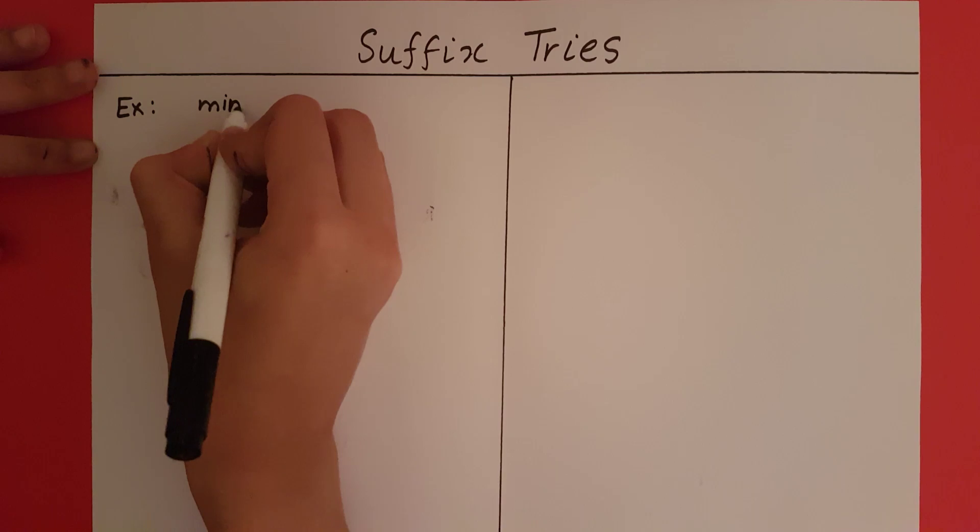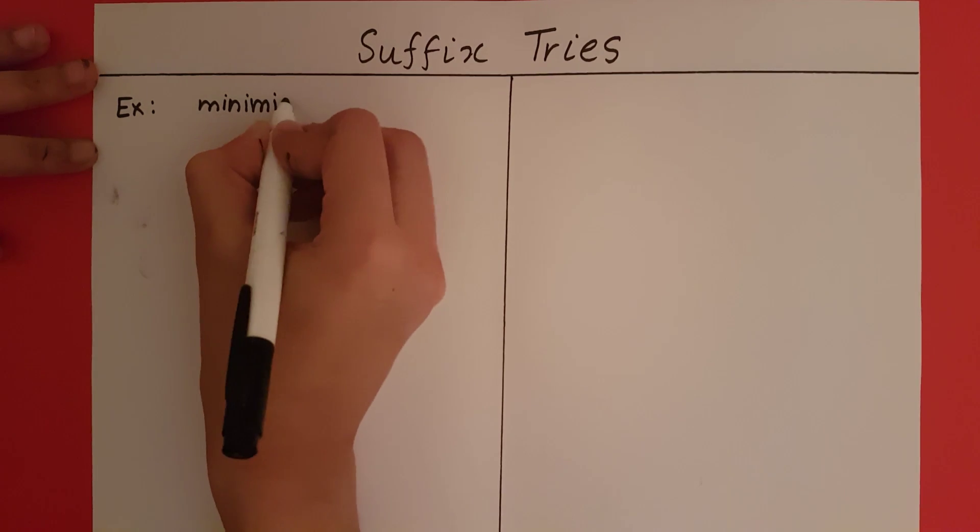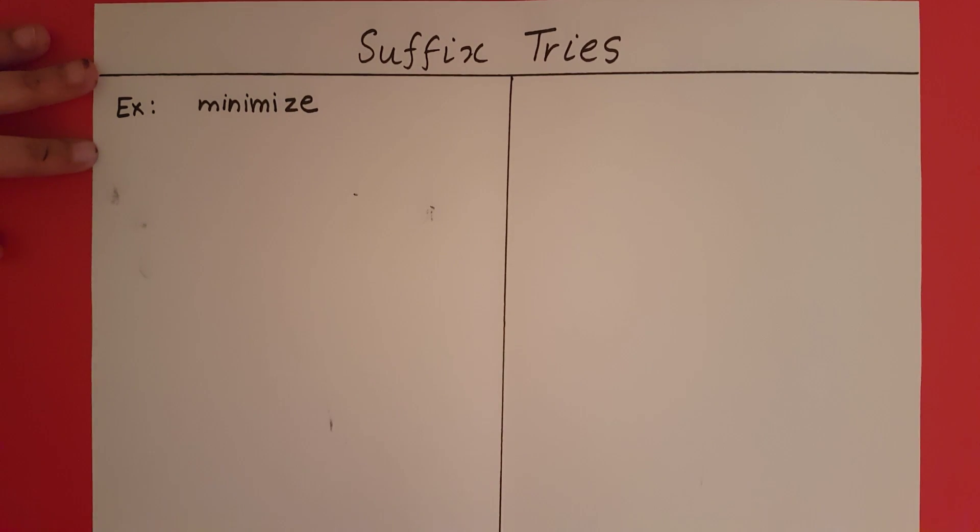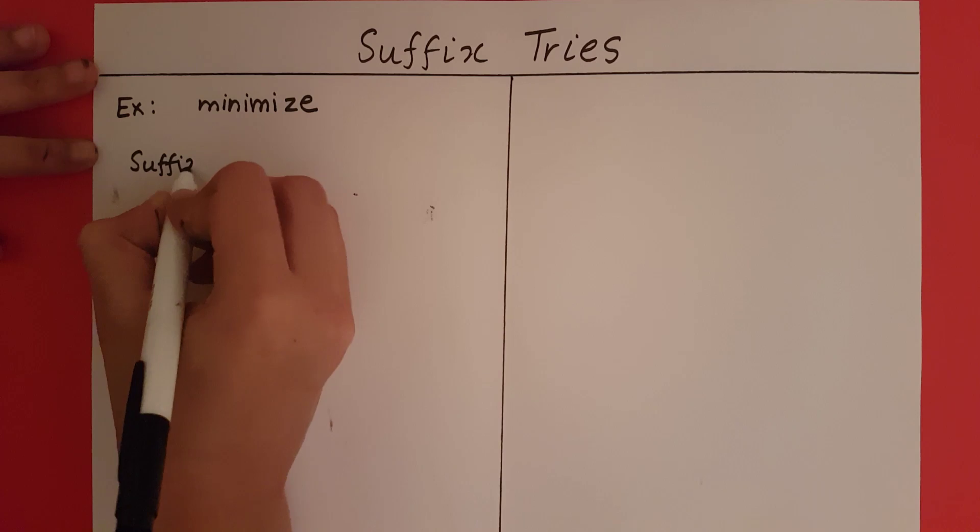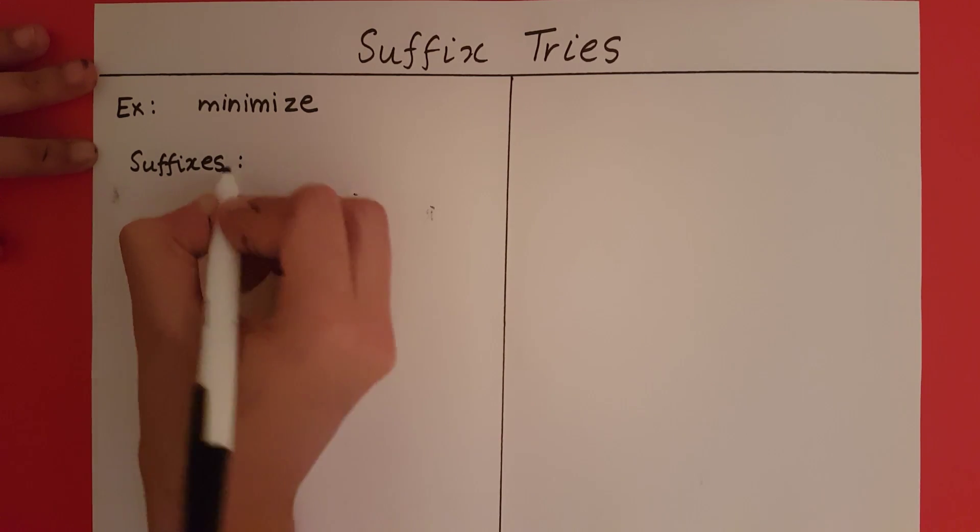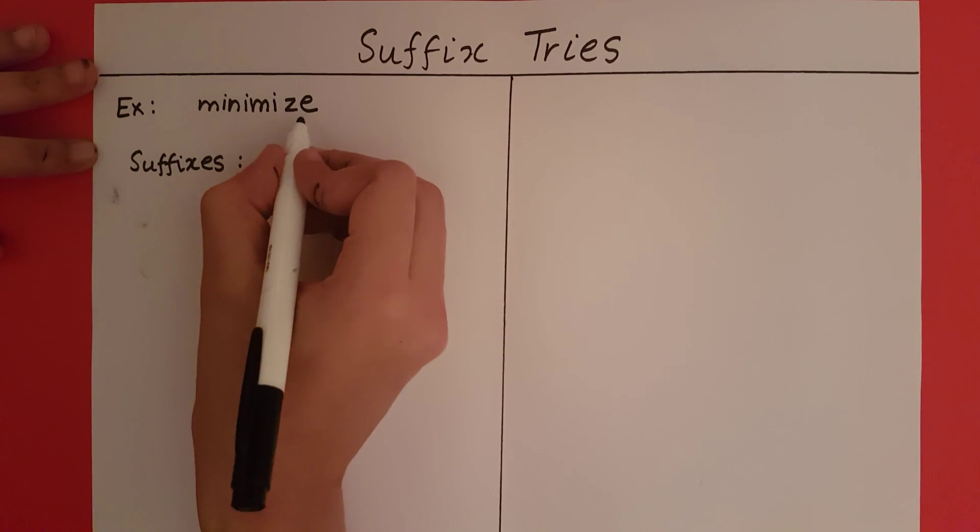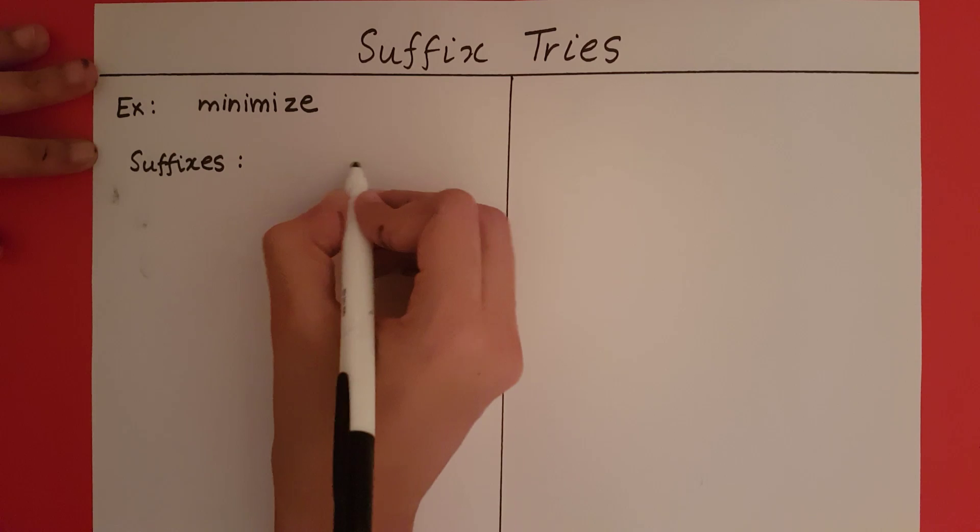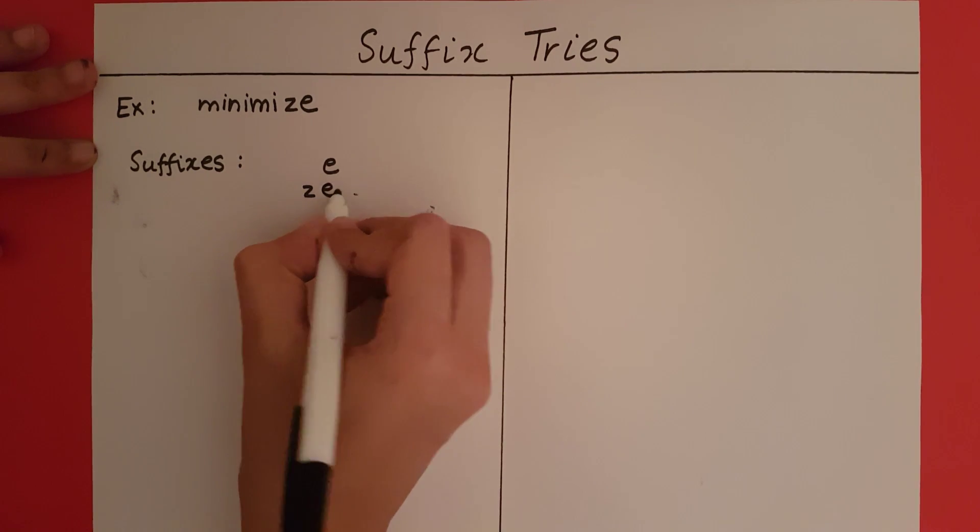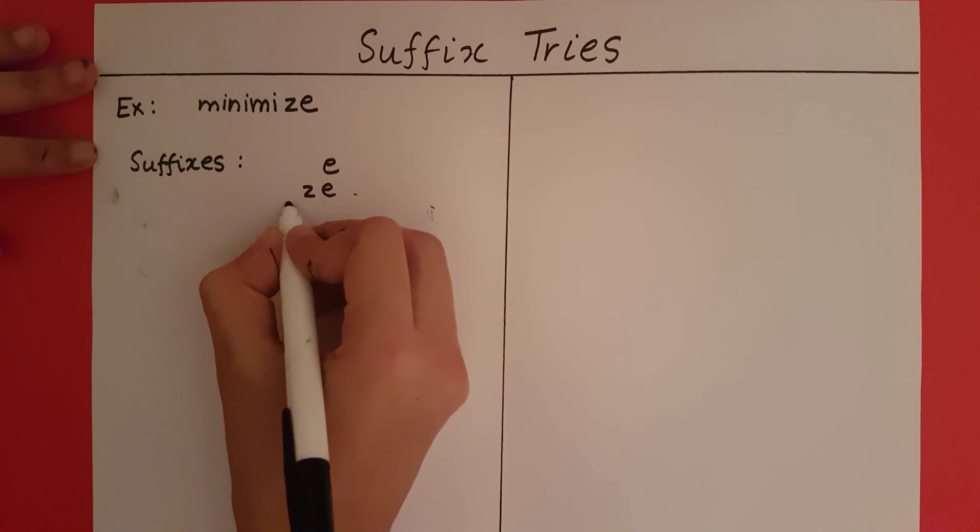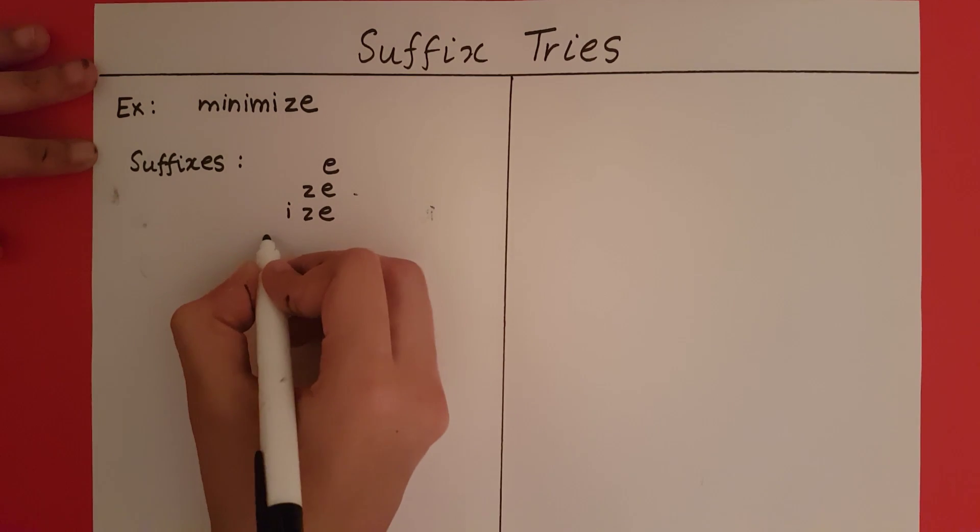The first step is to identify the suffixes of minimize. The first suffix is just the letter e, then we include z so it becomes ze, then we include i so it becomes ize, and so on.